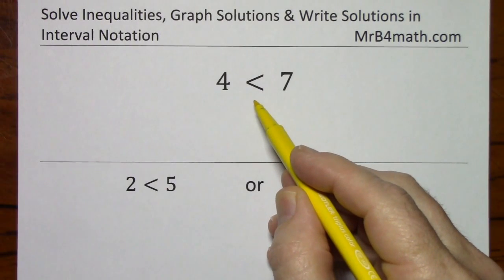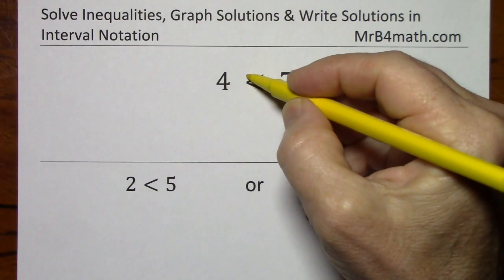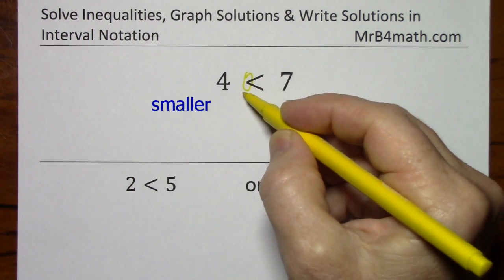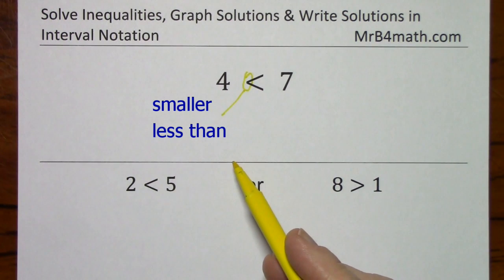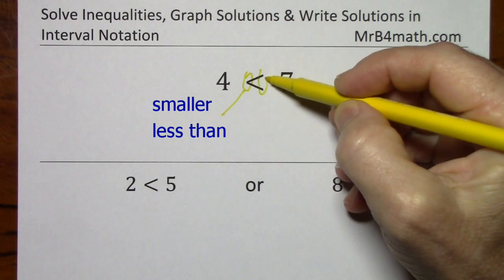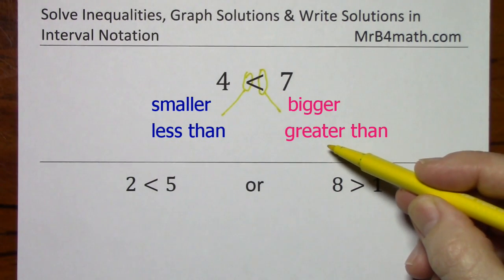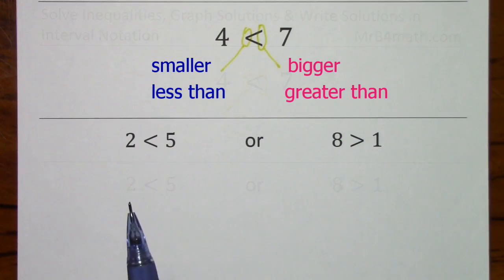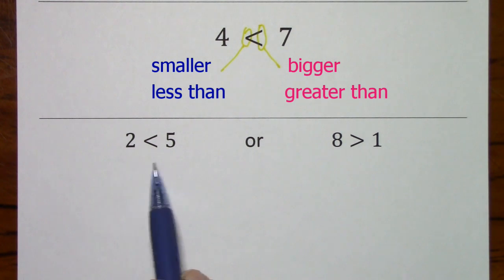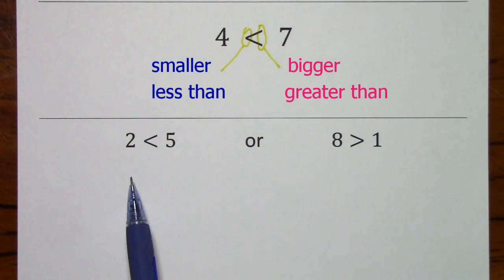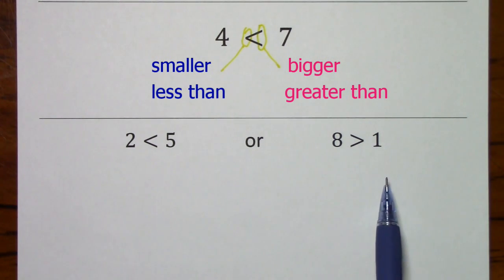I'm going to take a moment to talk about the inequality sign itself. Notice that the side that's smaller is less than, and the side that's bigger is greater than. If you're just working with numbers and no variables, it's fine to read from left to right — 2 is less than 5, or 8 is greater than 1.